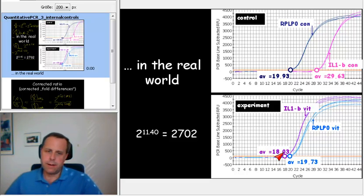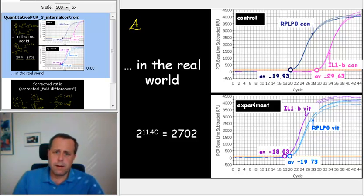If you calculate this roughly, what you get is that the ratio of interleukin in your experiment versus the naive cells is about 2 to the power of Delta CT. In this case, the Delta CT is about 12.